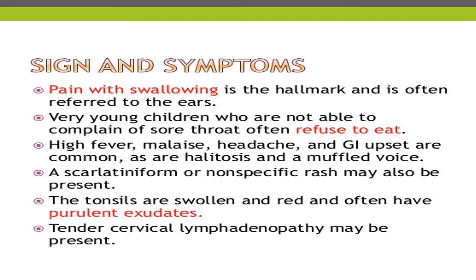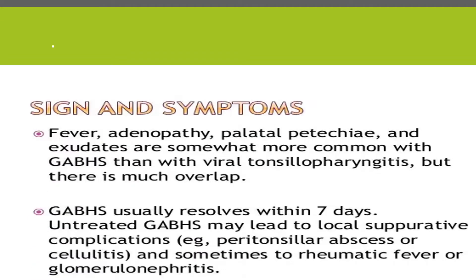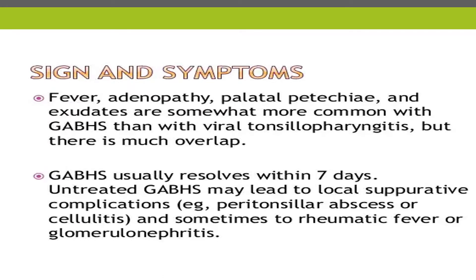Halitosis and a muffled voice can appear. A scarlatiniform or nonspecific rash may also be present. The tonsils are swollen and red and often have purulent exudates, and tender cervical lymphadenopathy may also appear. Fever, adenopathy, palatal petechiae, and exudates are somewhat more common with Group A beta-hemolytic streptococcus than with viral tonsillopharyngitis, but there is much overlap. Group A beta-hemolytic streptococcus usually resolves within seven days, but untreated it may lead to local suppurative complications such as peritonsillar abscess or cellulitis, and sometimes to rheumatic fever and acute glomerulonephritis.